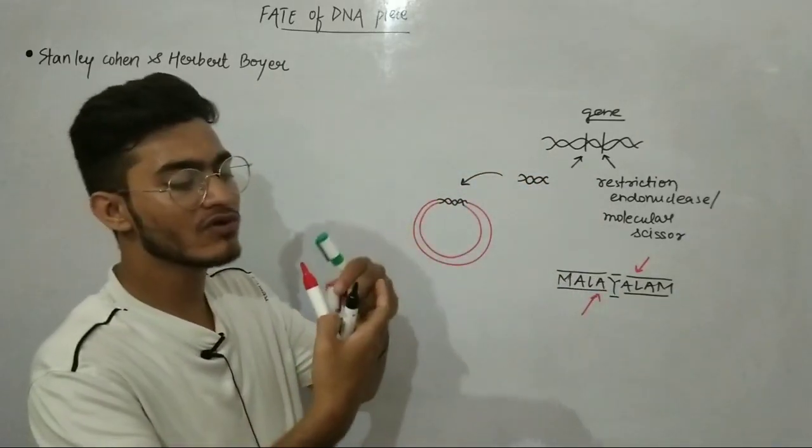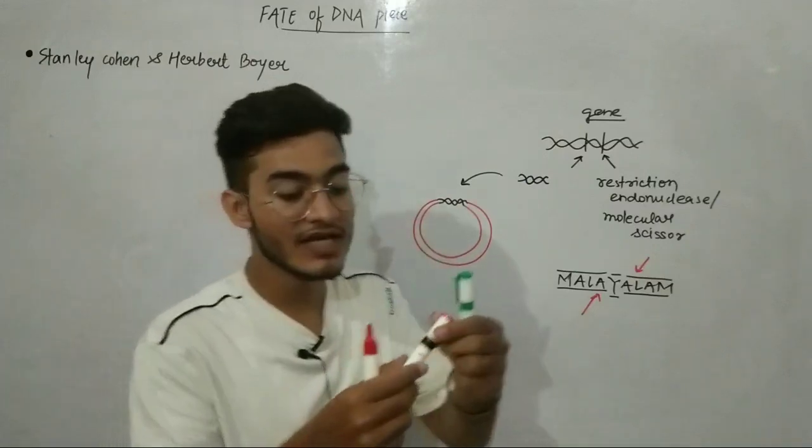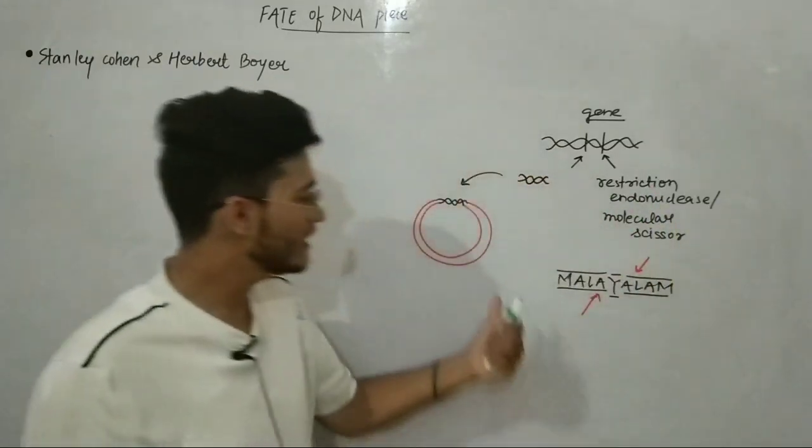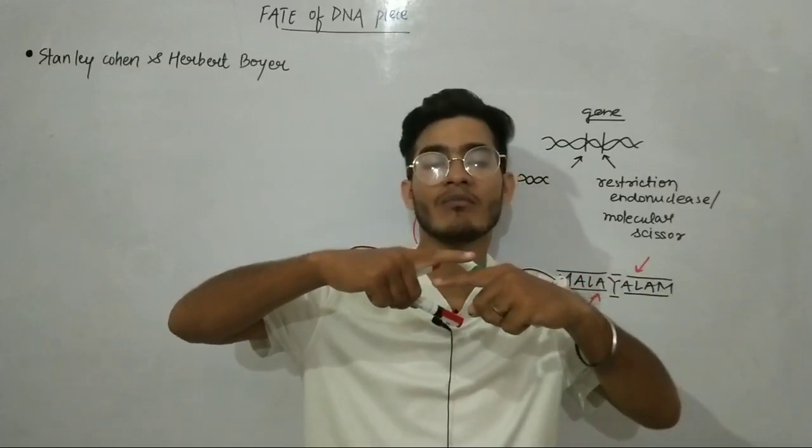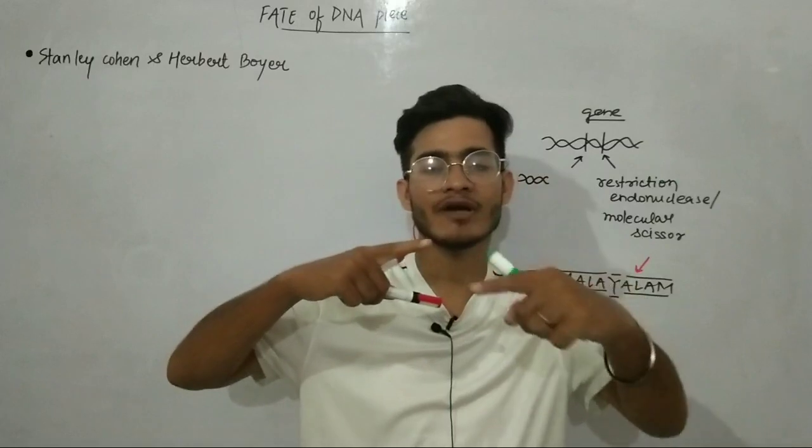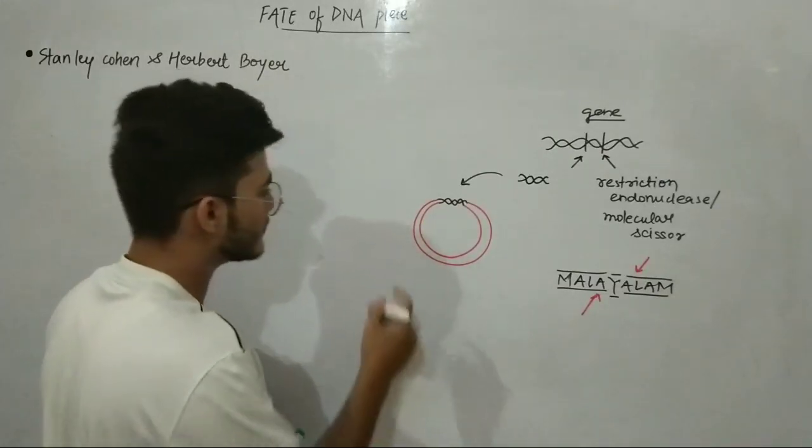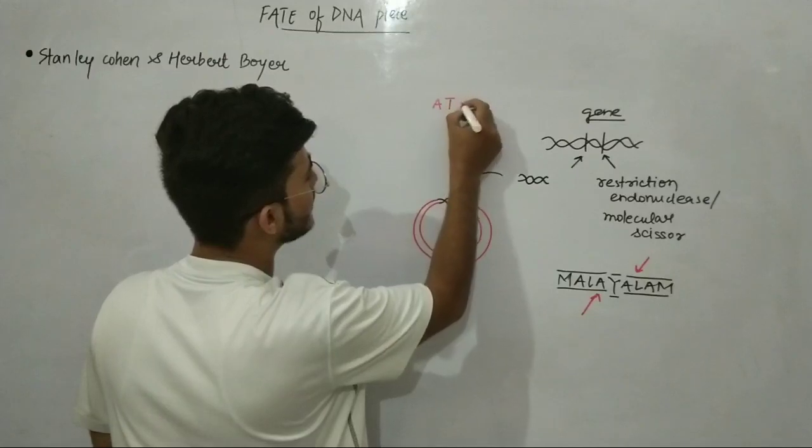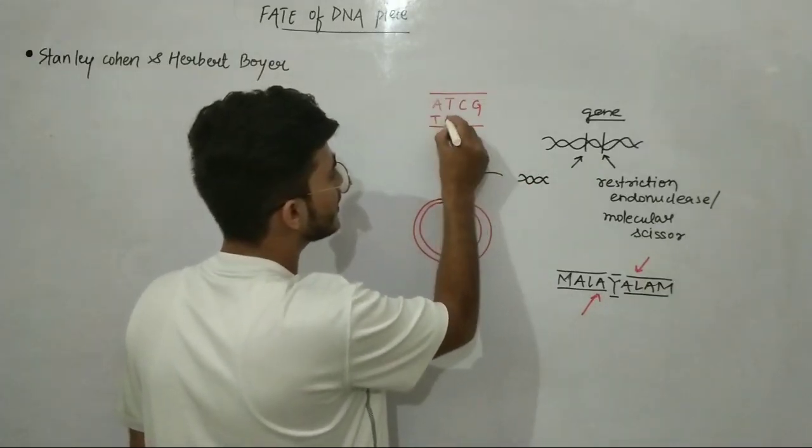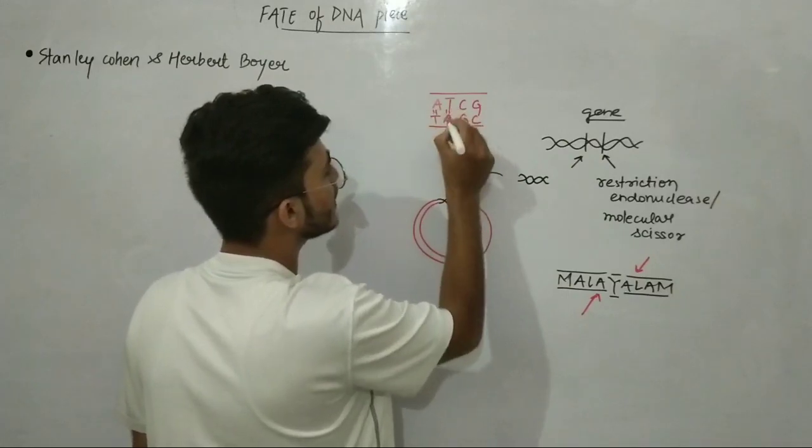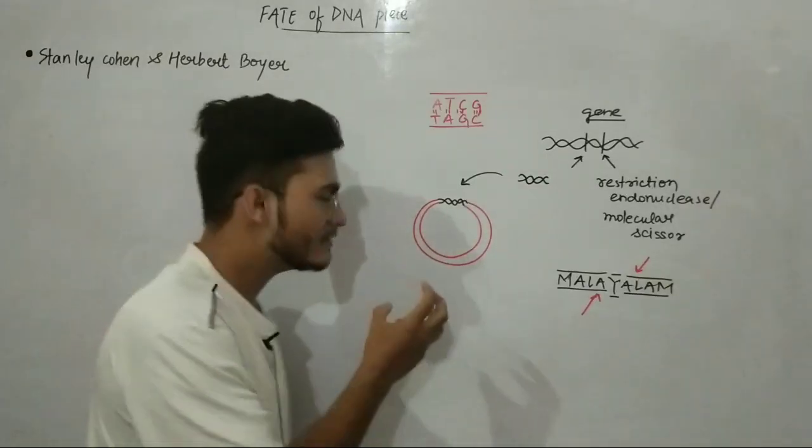Similarly there are some complementary sequences which are present at the end. You can say sticky ends because it shows complementary base pairing. If you have adenine then you will have thymine and you will have hydrogen bonds. This is the opposite segment. If there is adenine on one sequence, thymine on another, cytosine and guanine. Here T, here A, here G, here C. Two bonds will be made, three bonds will be made. In this way you will have complementary base pairing.